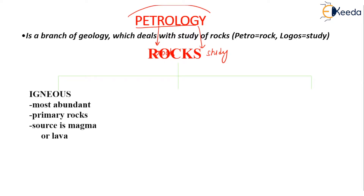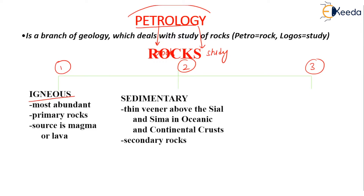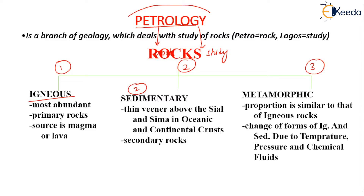Rocks are mainly classified into three types. The first type is igneous rock, the second one is sedimentary rock, and the third one is metamorphic rock. Coming to igneous rock, we know that it is the most abundant rock among all the following rocks.